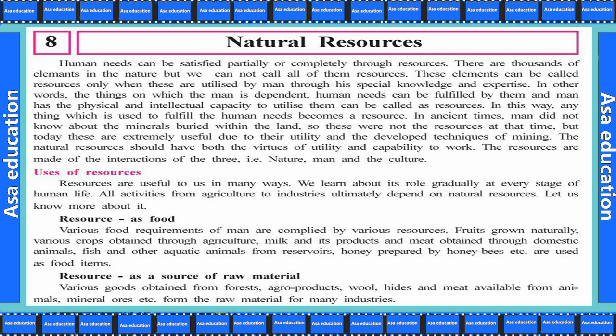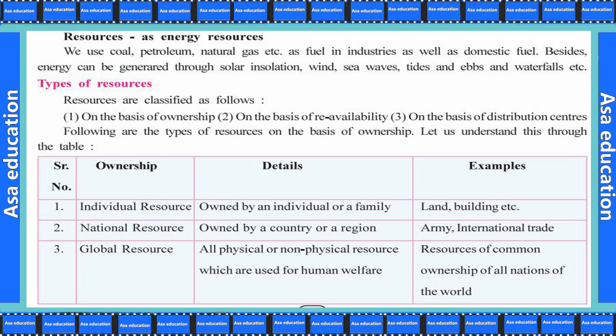As a resource of raw material, various goods obtained from forests — agro products, wools, hides, and meats available from animals, and mineral ores — form the raw material of many industries. Besides, energy can be generated through solar insolation, winds, sea waves, tides and ebbs, and waterfalls.